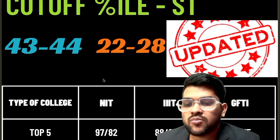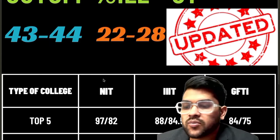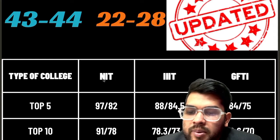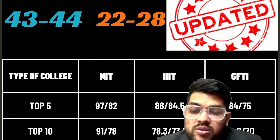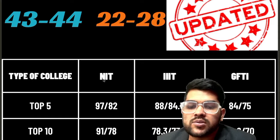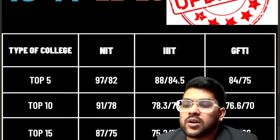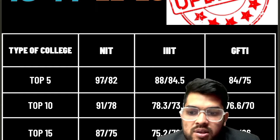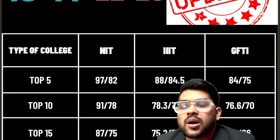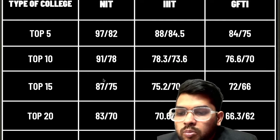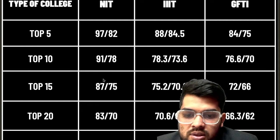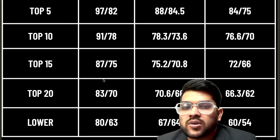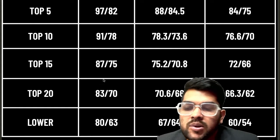For top 10 NITs: 91 and 78 percentile for CSE and lower branches respectively. For top 10 Triple ITs: 78.3 and 73.6 percentile. For top 10 GFTIs: 76.6 and 70 percentile. For top 15 NITs: 87 and 75.2 percentile for CSE, and 72 for lower branches. For top 20 NITs: 83 and 70.6 for CSE, 66.3 for lower. For top 20 Triple ITs and GFTIs: 80, 67, and 60 percentile respectively.